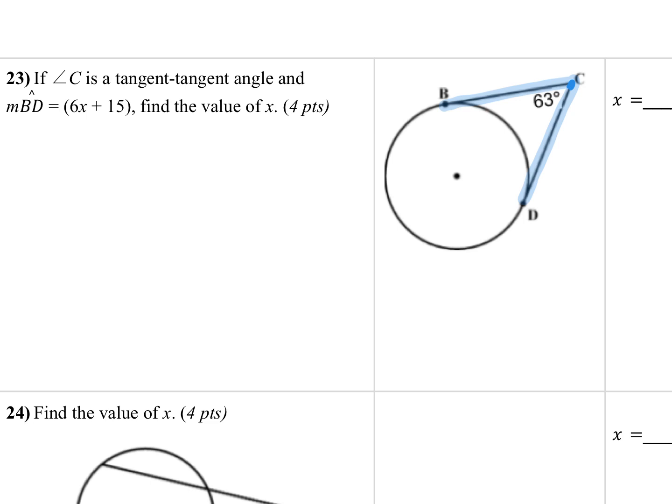But on this one, we also know that this arc, this minor arc that is closest to the angle, is supplementary to the angle. So this is 180 together. So we know that arc BD plus 63 is equal to 180. But we know that arc BD is actually 6x plus 15. So we can put that in for arc BD, and then we know, add on our 63, and that equals 180.